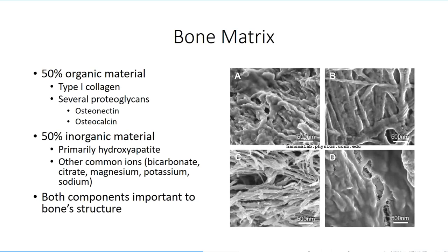This flexibility is best appreciated when we look at the properties of bone following cremation. The cremation process burns off the organic components of bone, leaving only the inorganic component behind. Following cremation, the bones become incredibly brittle and are easily ground down to a fine dust of inorganic materials. The inorganic component is made up of a number of ionic minerals, the most important of which is hydroxyapatite, formed from the interaction of positively charged calcium and negatively charged phosphate. This is what gives bone its strength and rigidity.